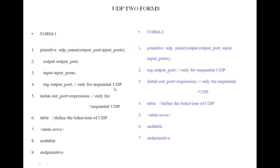The keyword 'reg' is used for the output port, but this is applicable only for sequential UDPs. So the output needs to be redeclared with the keyword 'reg' for sequential UDPs only. If you want to assign an initial value to the output port, we use an 'initial' block. Note that only 'initial' is used here — not 'always'. 'initial' is the only procedural block used in primitives.